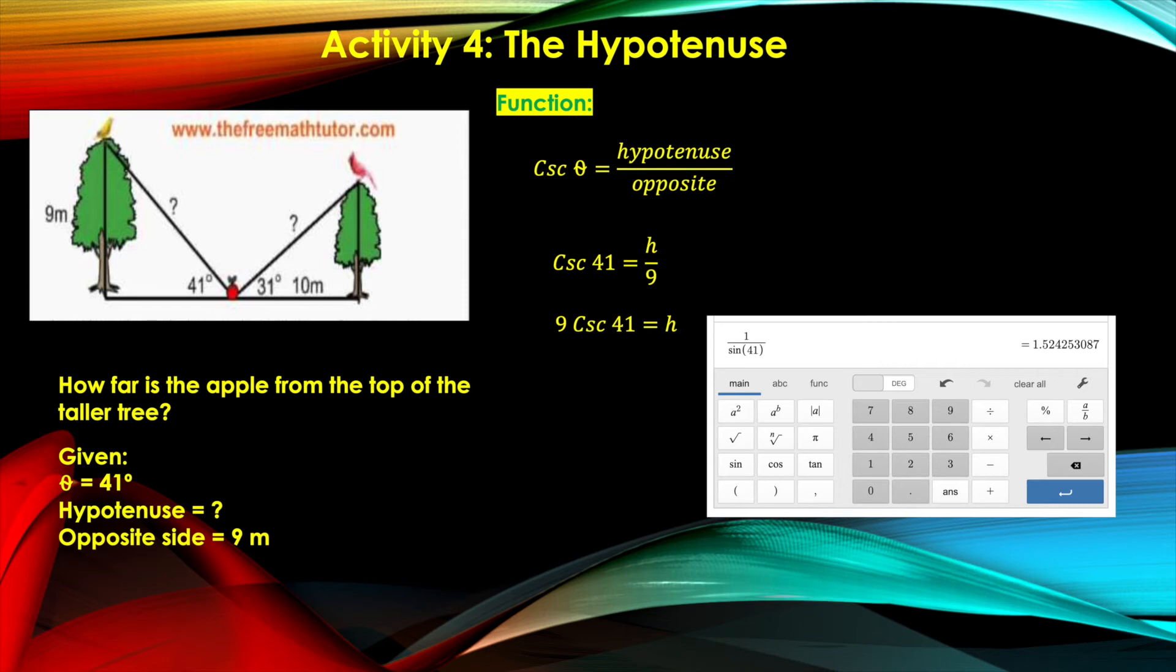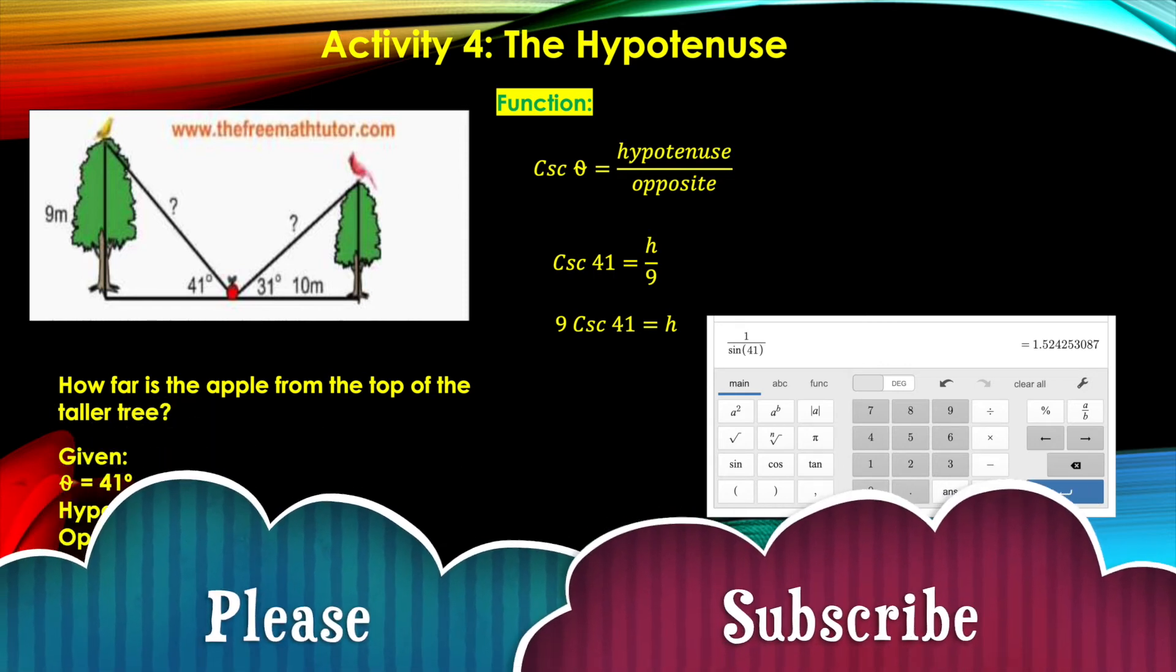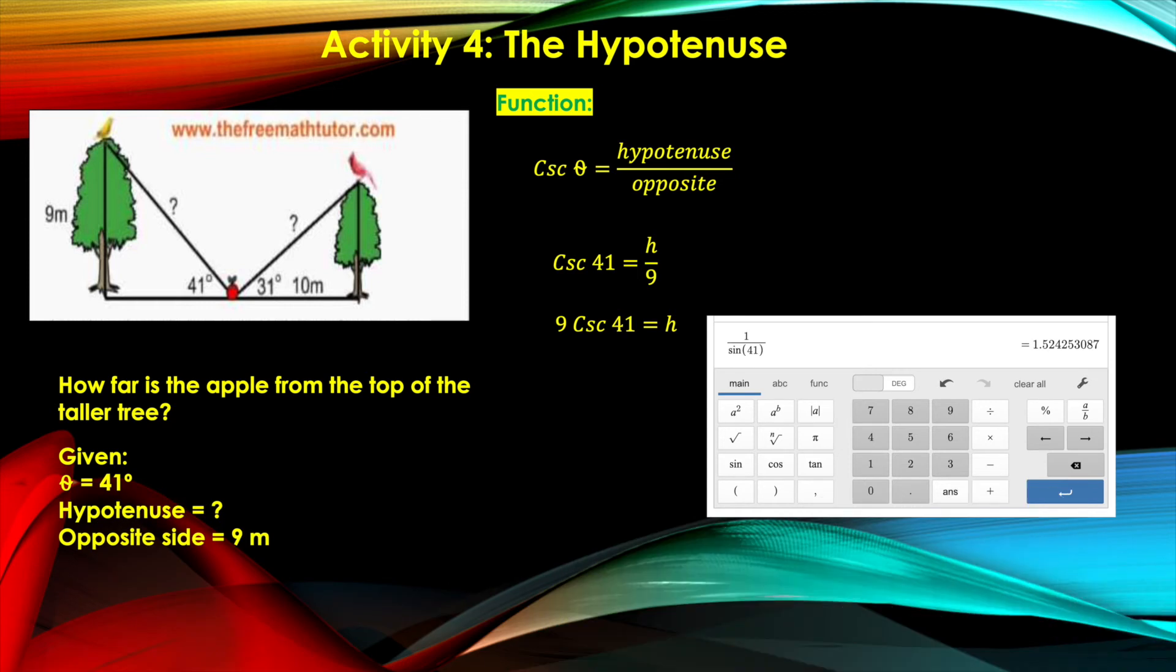That should be 1 over sine 41 degrees. That is equal to cosec 41 degrees. And the calculator gives us 1.524253087.